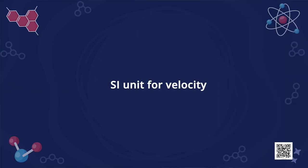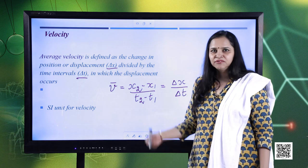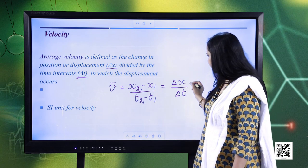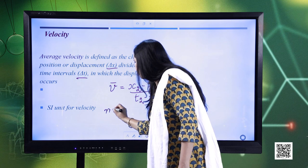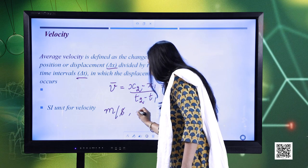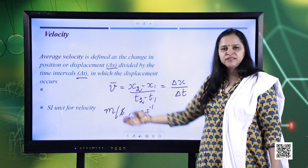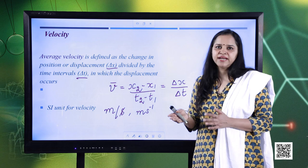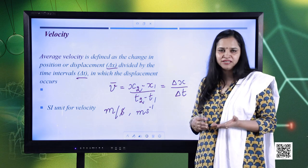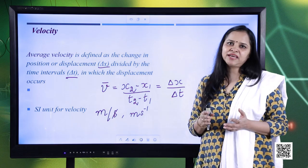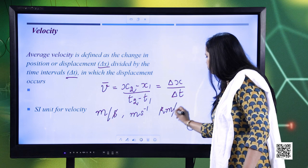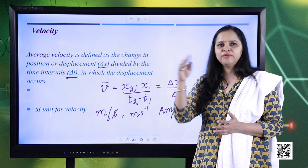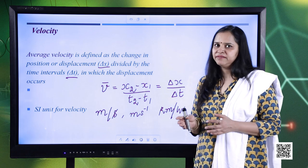The SI unit of velocity or average velocity — since it is displacement upon time — is meter per second, which can also be written as m·s⁻¹. In everyday life, when we talk about the velocity of vehicles, we generally express it in kilometers per hour. For example, a bus is moving with a velocity of 50 kilometers per hour.